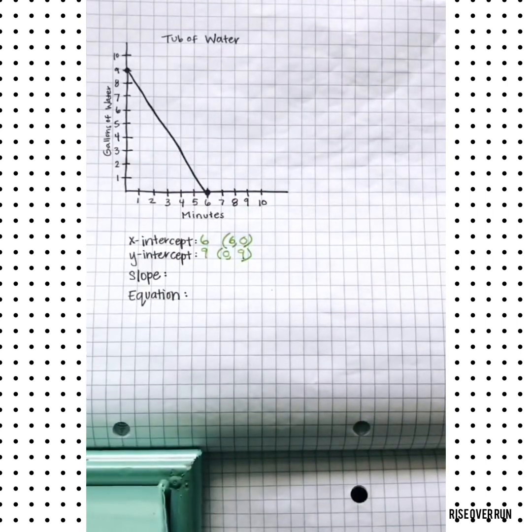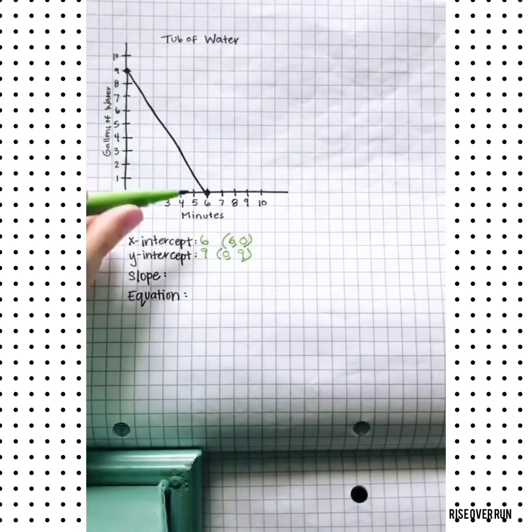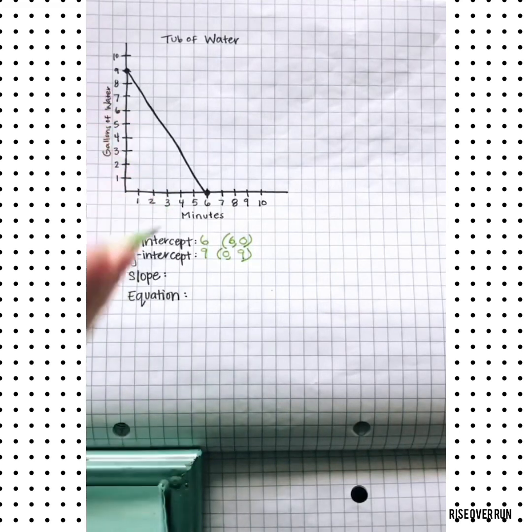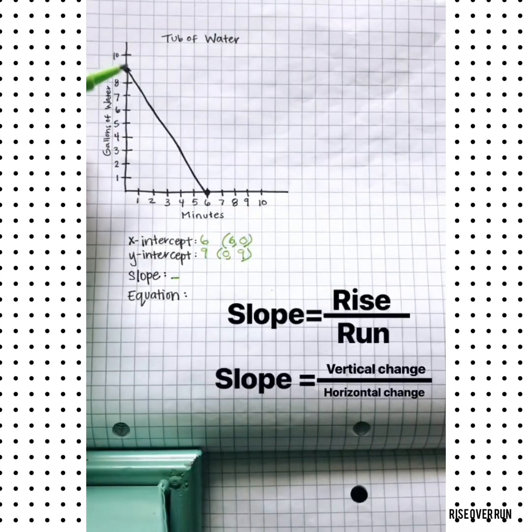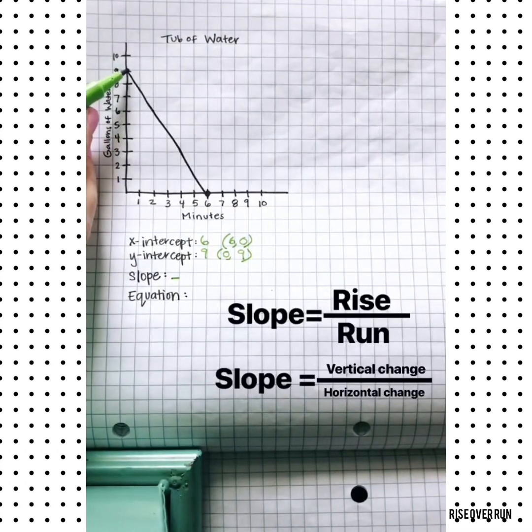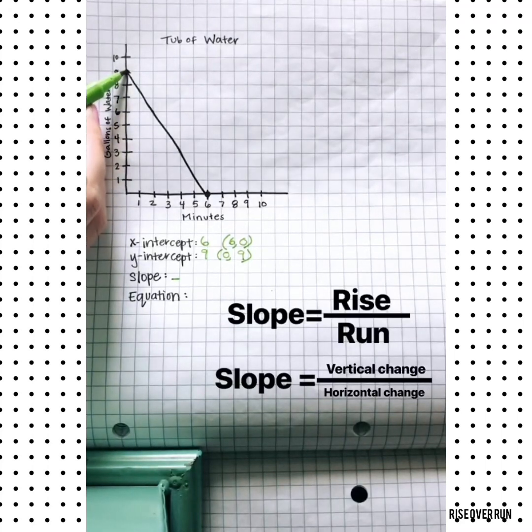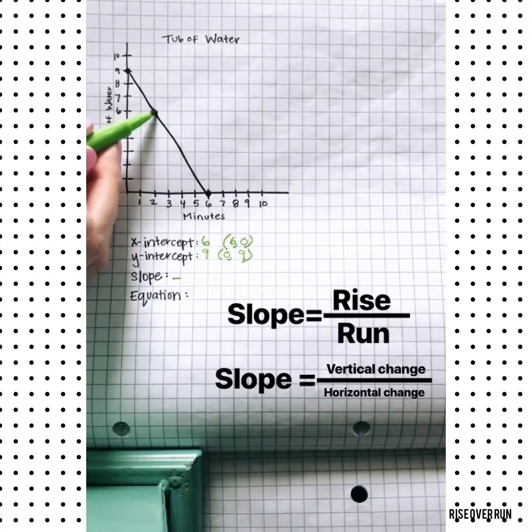To find slope, first we can just look at this line and see that it's going down to the right, so it's a negative slope, and then we want to actually find the rise over the run, the change in y over the change in x. To do this, you need to find two points that are on grid lines, so this is a good one, and this is a good one.